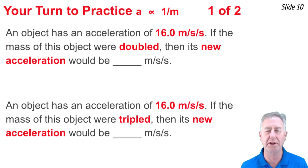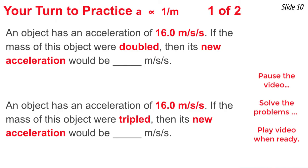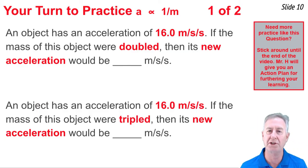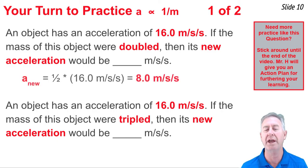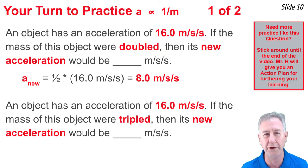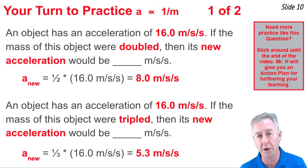Now it's your turn to practice with this idea that by whatever factor the mass is changed, the acceleration is changed by the reciprocal factor. Pause the video, solve these two problems, and then press play. In the first question, the original acceleration is 16 meters per second squared and the mass is doubled. The reciprocal of doubling is halving, so we halve 16 to get 8 meters per second squared. For the second question, the mass is tripled, and the reciprocal of tripling is one-third. We take one-third of 16 meters per second squared, giving 5.3 meters per second squared.